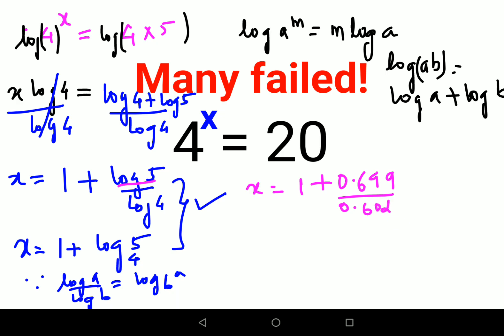And when you divide these values, you get 1 plus 0.161. So when you add them, you actually get 1.161. So the final answer or final value of x is 2.161.